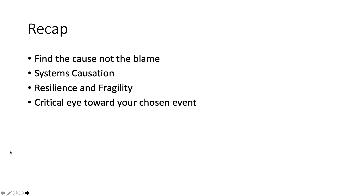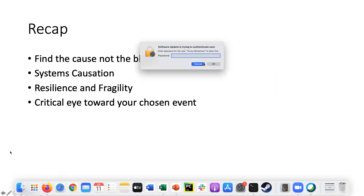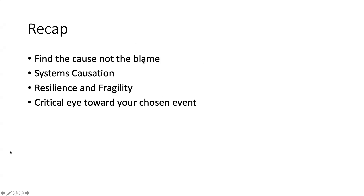Remember, in an accident investigation, we want to find the cause, not the blame. We spoke about different kinds of causation. Traditional causation was trying to figure out where the blame point was and over-focused on human error, whereas systems causation looks at an accident from a systems perspective, considering all the various components and trying to find where the causes may be. Humans are just one part of that system.